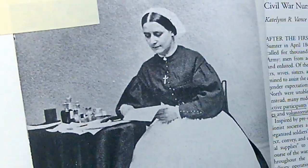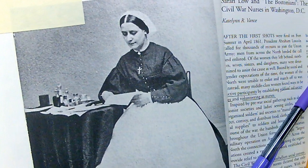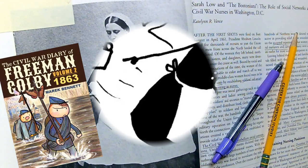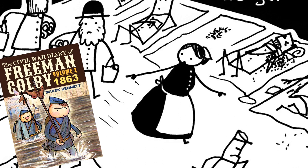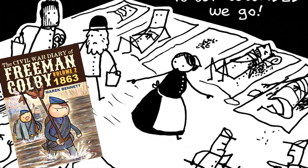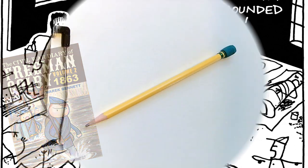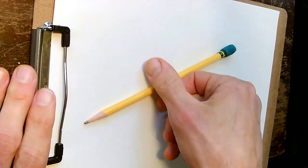Well today I'm thinking about Sarah Lowe. You know she's that young volunteer nurse we met in Freeman Colby volume 2. She's in charge of an entire ward at Armory Square Hospital as all these sick and wounded soldiers are coming in from the front. So if you get out your paper and pencil we're going to try drawing her as a stick figure cartoon.